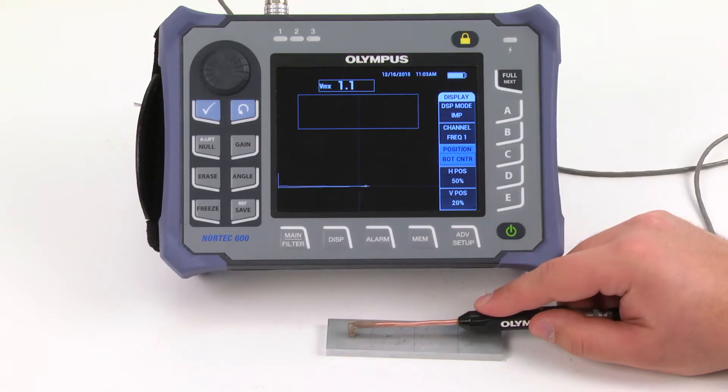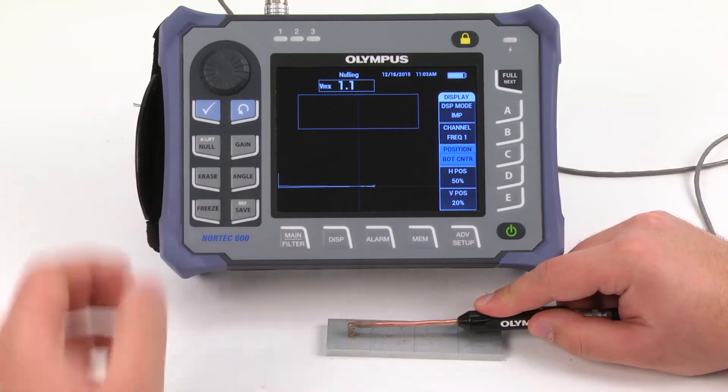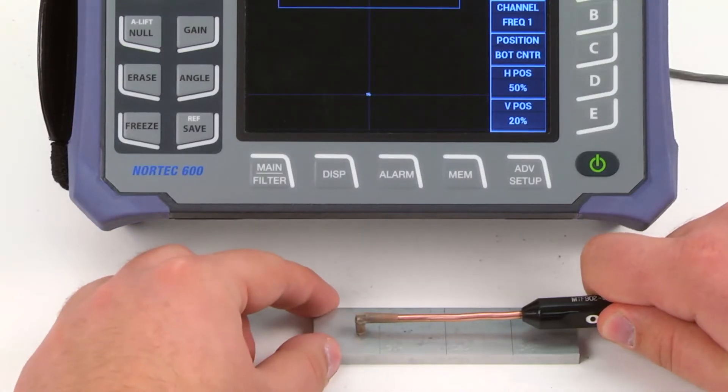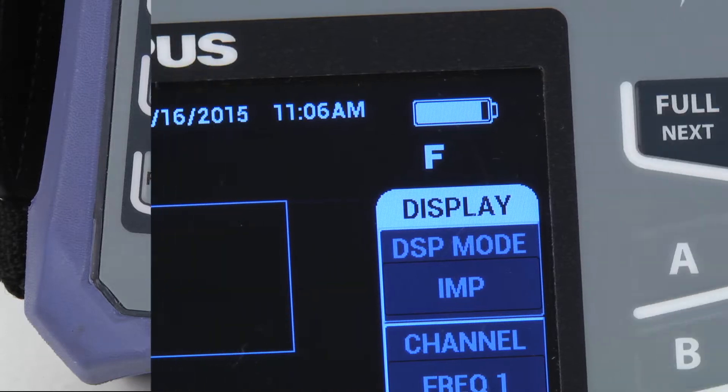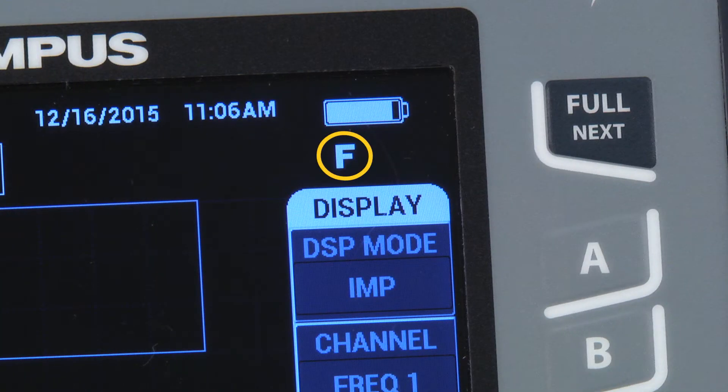Now put the probe on a defect-free area and press Null once. Scan the sample and press the Freeze key. Once in Freeze mode, an F should appear below the battery indicator.